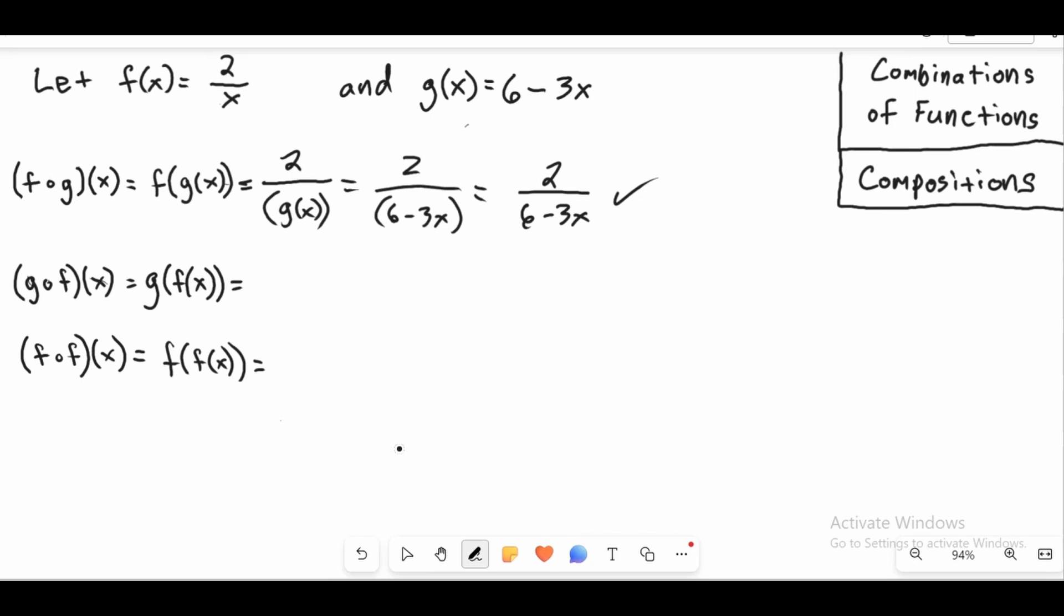Now let's try g of f of x. This one's a little more complicated. So what we're going to have here is 6 minus 3x, but instead of x, we're going to put in f(x). So it's 6 minus 3 times f(x) because we're putting f(x) in place of x. Let's take away this f(x) notation and put in what f(x) is equal to, which is 2 over x.